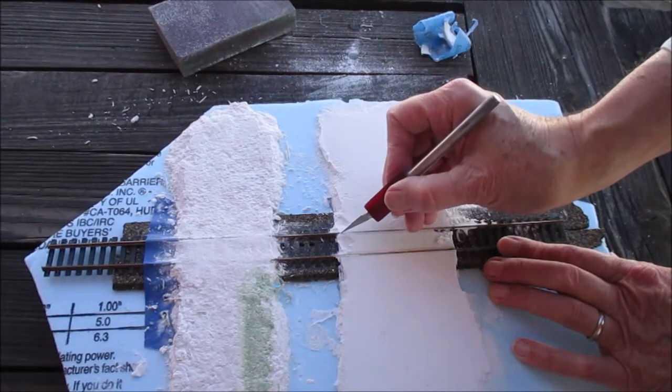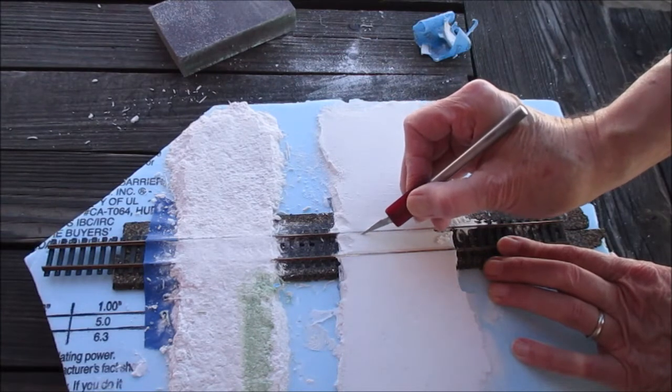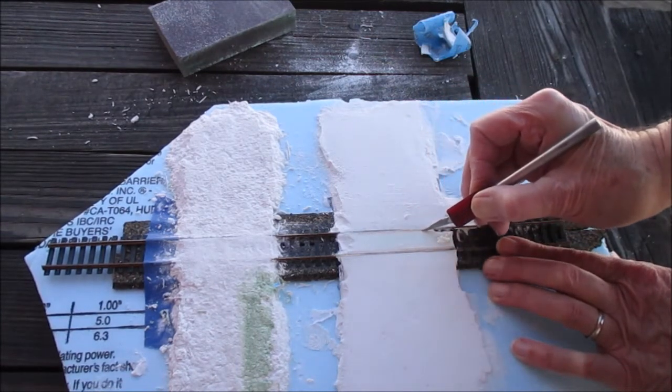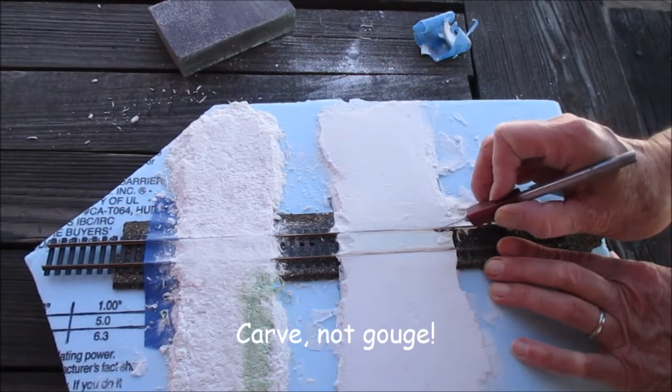I think what might have been a better idea was to just use the X-Acto blade and gouge out a flangeway.